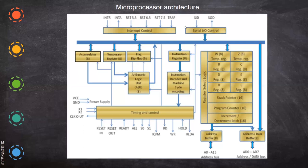Then we have control signals, interrupt signals, serial I/O controls, etc. Other than this, we have a 16-bit register. If you take H and L together, it is a 16-bit register, so as a whole this 16-bit register can be involved in any calculations or operations. Then we have the stack pointer, program counter, and increment and decrement latch. We will see what the operations of all these are one by one.